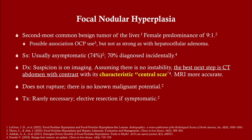Focal nodular hyperplasia is the second most common benign tumor of the liver. It has a female predominance. There is a possible association with oral contraceptive use, but it's not as strong as with hepatocellular adenoma. Most patients are asymptomatic — 70 percent are diagnosed incidentally. Diagnosis: suspect based on imaging; get CT abdomen with contrast. A characteristic central scar is seen on CT or MRI, and this is what you'll likely be tested on.